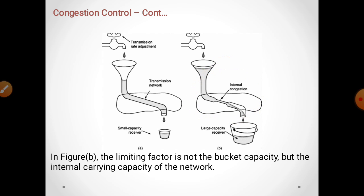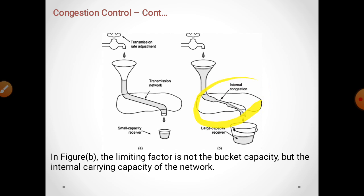In Figure B, the receiving side is not the issue — the bucket capacity is more than the amount of packets that need to be received. But the internal congestion capacity of the network channel is less. So the sender sends a large amount of data, but the internal network capacity is limited, meaning the data cannot reach the receiver side fully, even though the receiver side capacity is more.